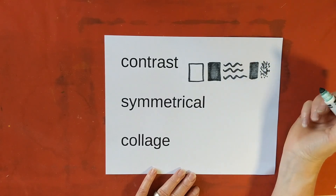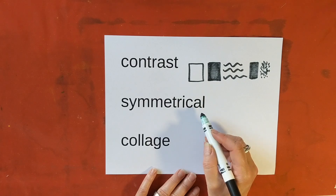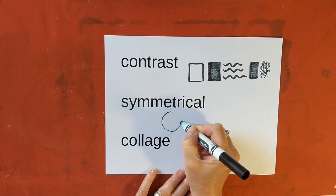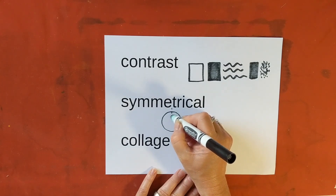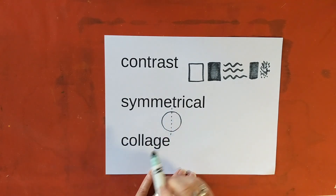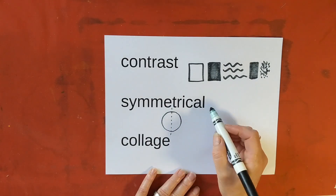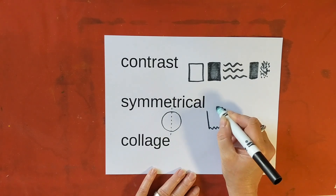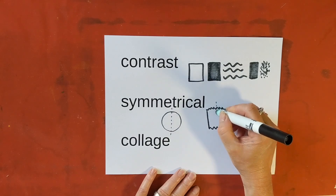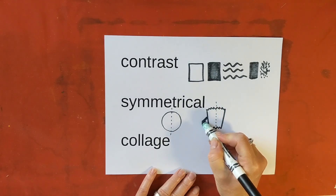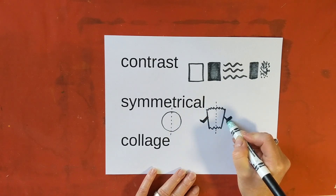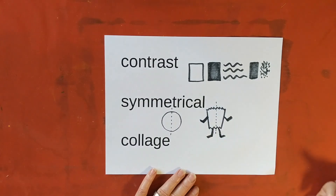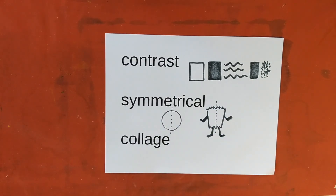Symmetrical is something that is the same on both sides. A circle has a line of symmetry — a line that goes right down the middle — which means both sides are the same. We're going to use this for our monster. So I'm going to do a simple shape of the monster and he's going to have a line of symmetry. That means if we put one arm on this side, we've got to put one arm on this side to make sure it matches. And if we put one leg on this side, we've got to put one leg on the other side.